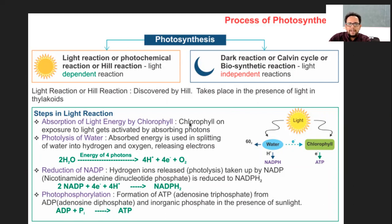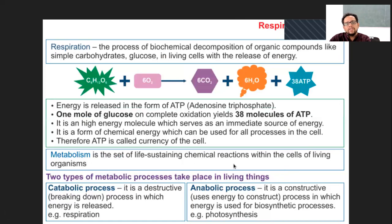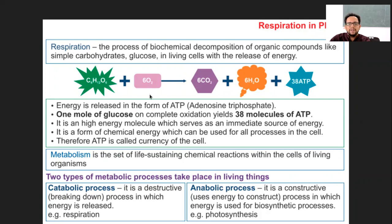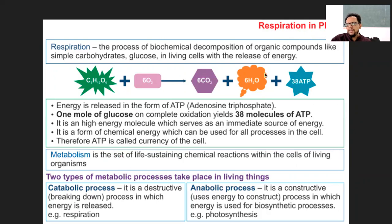This next part is not within your syllabus, but just to mention: after glucose is generated, it is added with oxygen and releases products. Through a glycolysis-like process, 38 molecules of ATP are generated. One glucose molecule can generate up to 36 to 38 molecules of ATP.